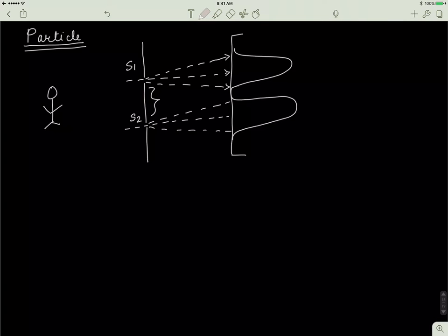So our pattern looks like this for the double-slit experiment when you throw particles. Don't confuse this to be a wave pattern — it just shows that you have some distribution. If you divide this into two parts, it's basically one intensity curve for one slit and a second intensity curve for the second slit, with no intensity in between because there's a barrier. This is how it would look if you started throwing particles through the slits. If electrons or light behaved like a particle, then sending it through a double slit, we would see this pattern.